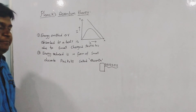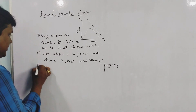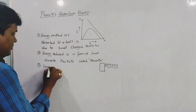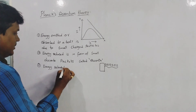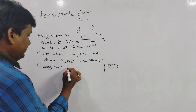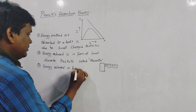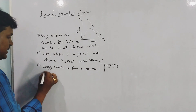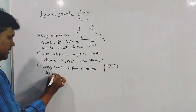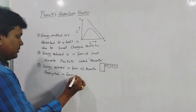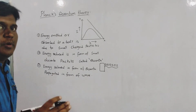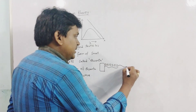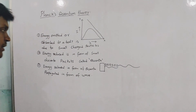The third point is: the energy released in the form of quanta — that is, small energy packets — is propagated in the form of a wave. They come out as discrete small energy packets, but after coming out they propagate as a wave.